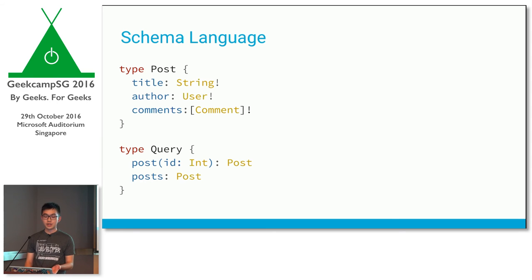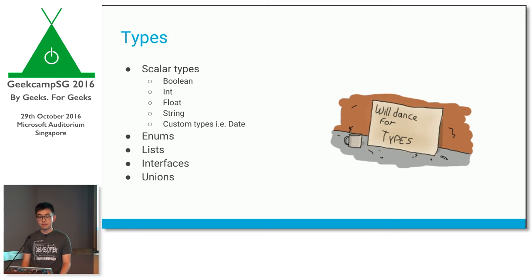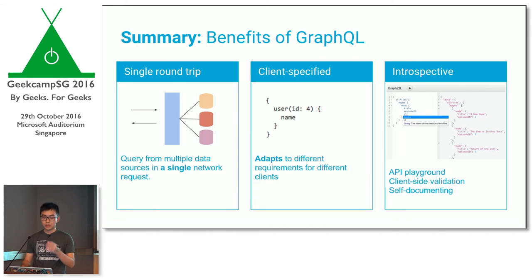The schema language lets you describe the objects of your domain. For example, in a blogging platform you have a Post object with fields like title, author, and comments. Each field has a type — it could be a scalar type such as String, or a custom type such as User or Comment. The exclamation point means non-null. You also have to define the possible roots of your tree, often called the query type or root type. It's a full type system with scalar types, enums, lists, interfaces, tagged unions, and more — so you can describe your business domain very accurately.